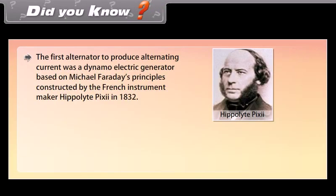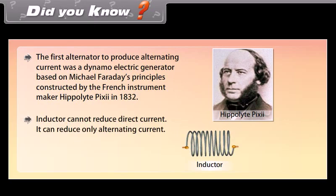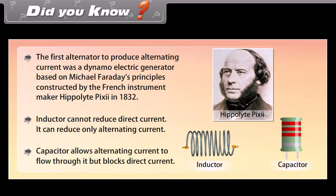The first alternator to produce alternating current was a dynamo electric generator based on Michael Faraday's principles, constructed by French instrument maker Hippolyte Pixii in 1832. An inductor cannot reduce direct current; it can reduce only alternating current. A capacitor allows alternating current to flow through it but blocks direct current.